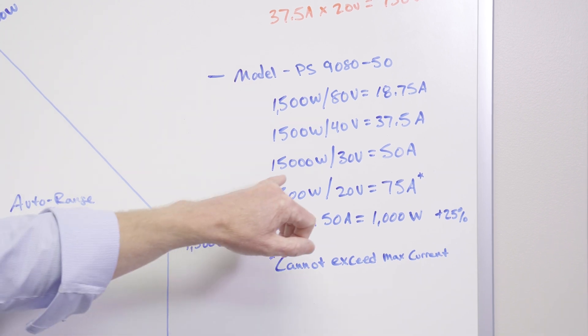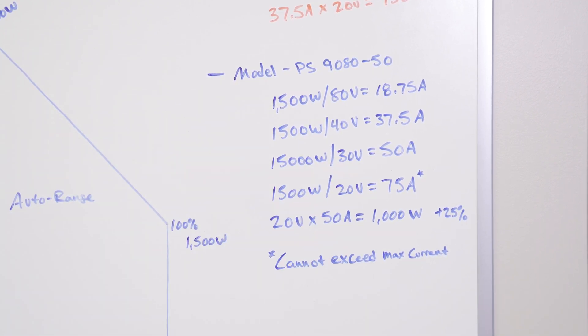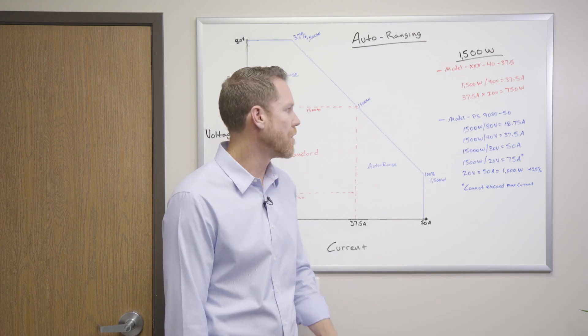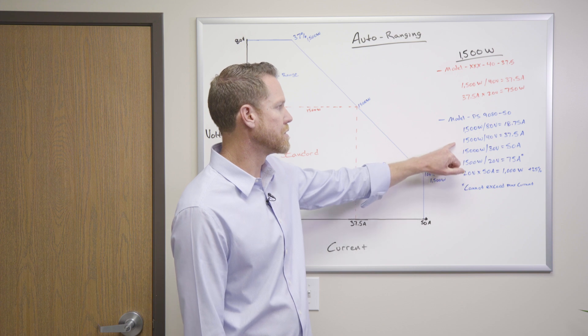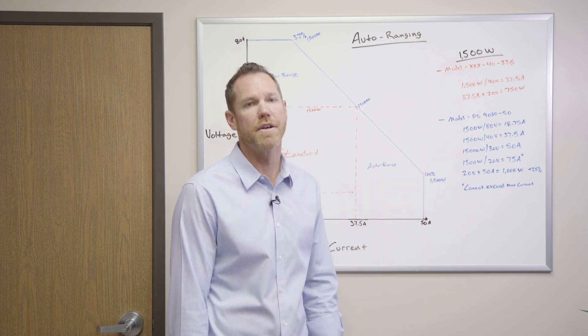Now, here's the difference. When you get down to that same 1500 watts and you divide it by 30 volts, you're looking at a total of 50 amps. So as you can see, as you fluctuate the voltage, the power supply will automatically adjust the available output current that's available.